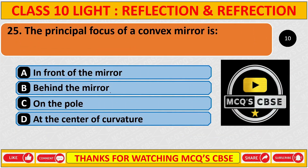The principal focus of a convex mirror is: the correct answer is B: behind the mirror. Please like and subscribe our channel to get regular updates. Thank you.